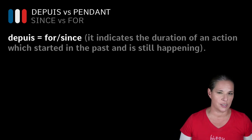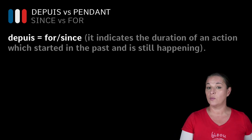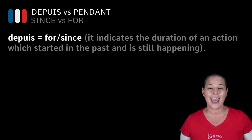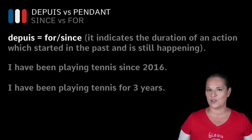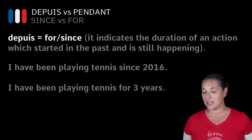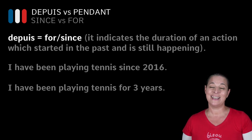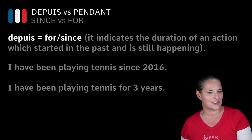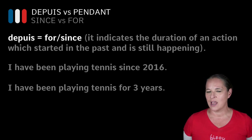And I think this is where the confusion arises when you speak English and you want to translate a sentence such as 'I have been playing tennis since 2016' or 'I have been playing tennis for three years.' Let's have a look at how we do that.